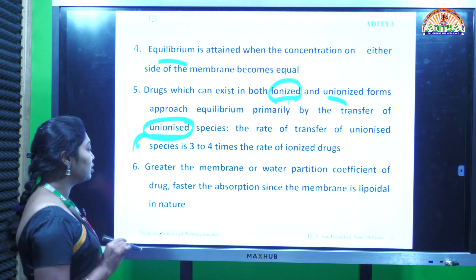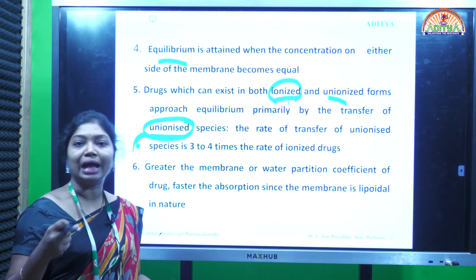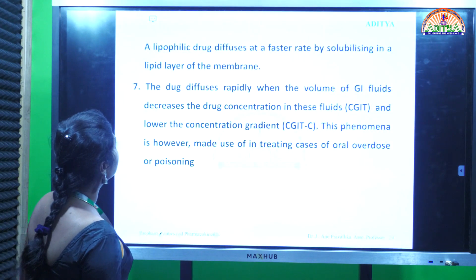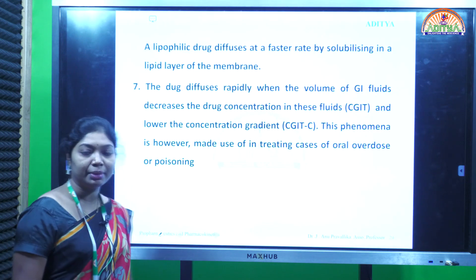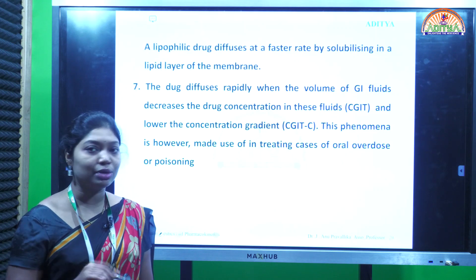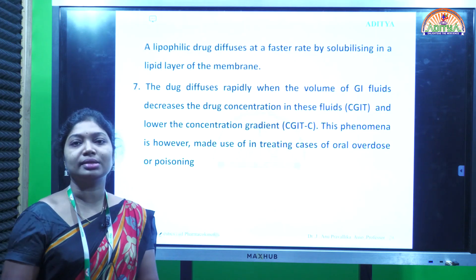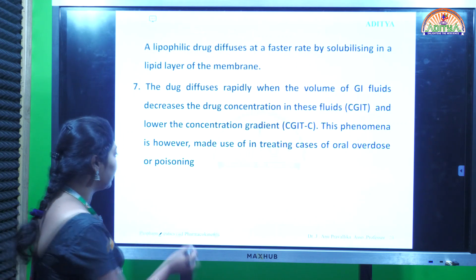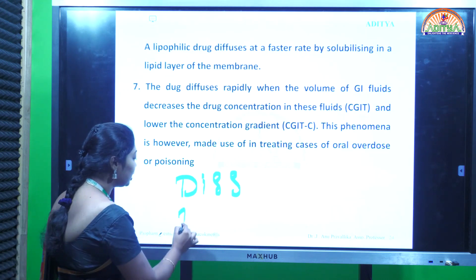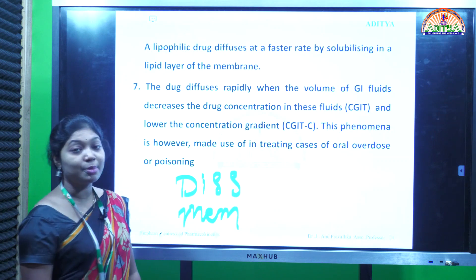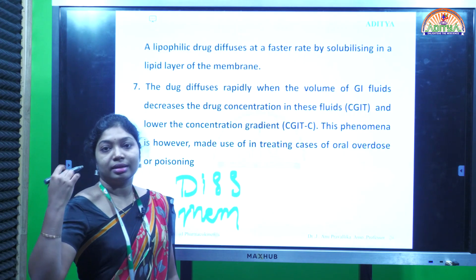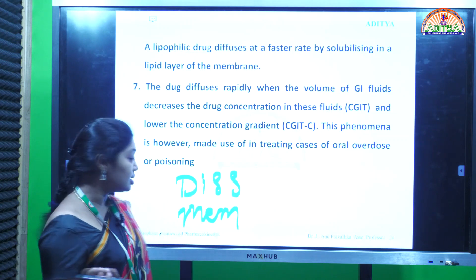Greater the membrane-to-water partition coefficient of the drug, faster the absorption. A lipophilic drug diffuses at a faster rate by solubilizing in the lipid layer of the membrane. However, a drug should have both hydrophilic and lipophilic characteristics - if the drug is only oil-soluble, dissolution becomes the rate-limiting step; if it is only hydrophilic, membrane permeation is the rate-limiting step. Any drug must have both properties to dissolve and cross the membrane rapidly for the best therapeutic effects.